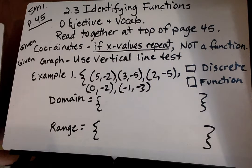Now there's a couple ways to tell whether something is a function or not. If you're given coordinates, all you have to do is see if the x values repeat. If they do then it is not a function. And then I will show you the vertical line test if you're given a graph.